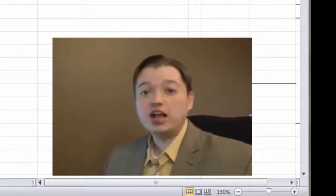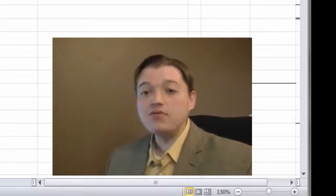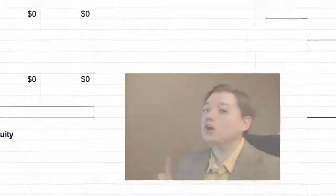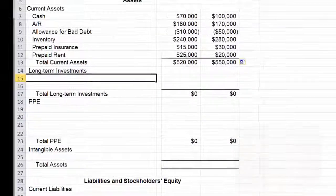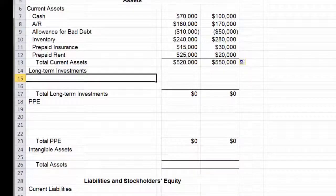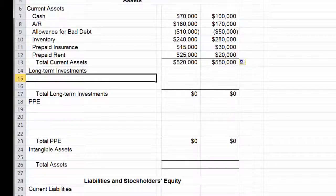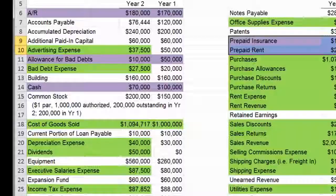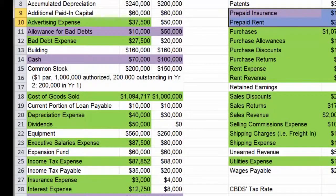Now that we've got that current assets section done, it's time to move on to long-term investments. Remember, long-term investments are assets that we've purchased not to use, but to hold and then sell later, hopefully at a nice profit. Let's take a look at our raw data tab and see if we can find the two long-term investments that this company uses.